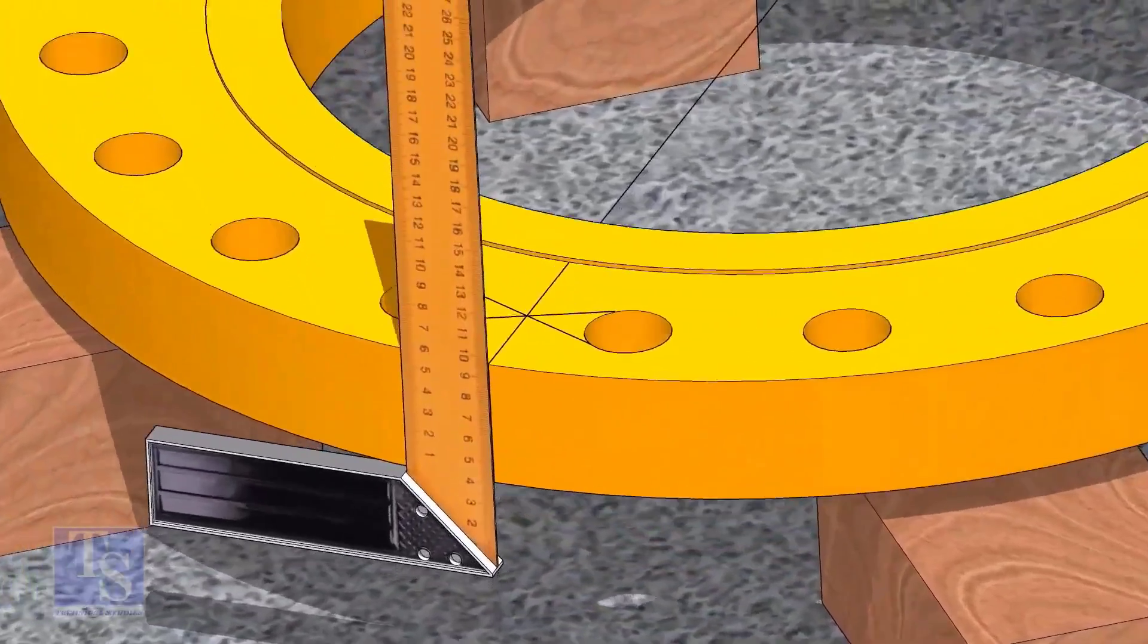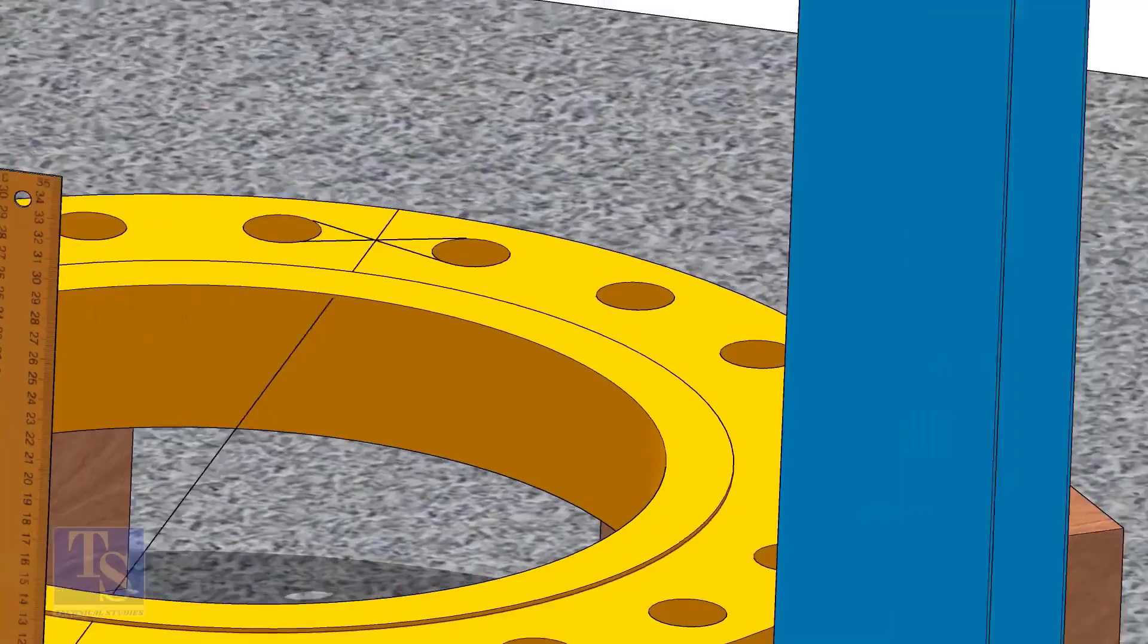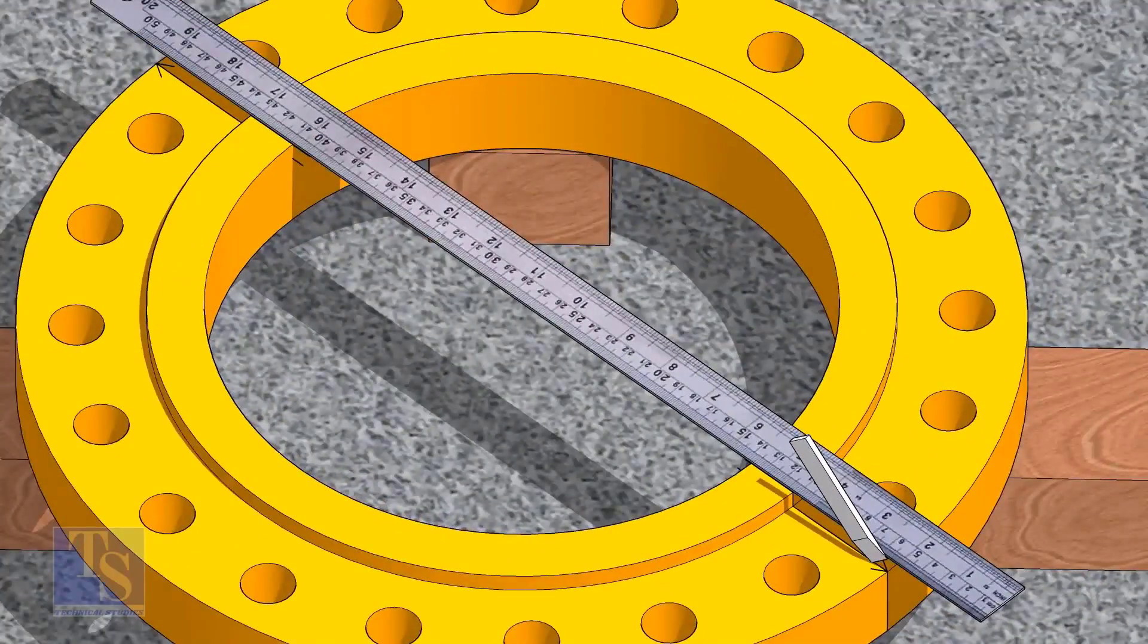Now, transfer the center line to the sides of the flange. Overturn the flange and transfer the center line on the back side of the flange.